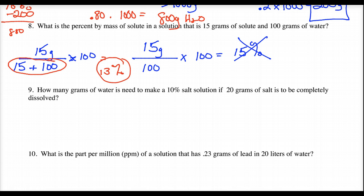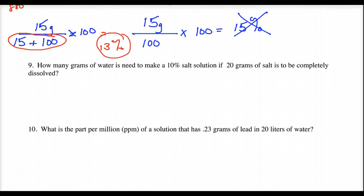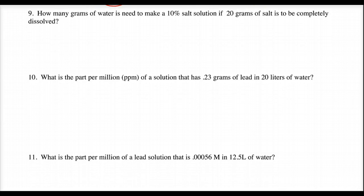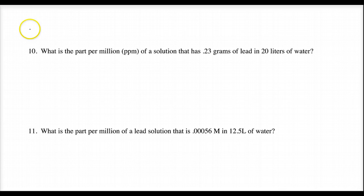I'll leave number 9 alone for homework. Let's go on to number 10. Number 10 mentions something called part per million. Now, part per million is what we use for very, very dilute solutions. Very dilute.